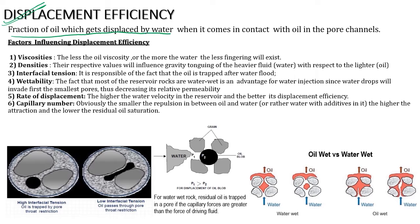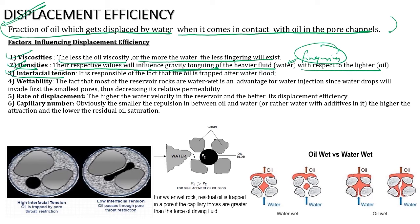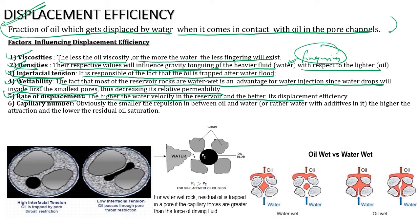Displacement efficiency is the fraction of oil displaced by water when it comes in contact with oil in the pore channels. Factors influencing displacement efficiency: viscosities — less oil viscosity or more water viscosity means less fingering. Densities — their respective values influence gravity tanking of the heavier fluid with respect to lighter oil. IFT is responsible for oil being trapped after the water flood. Wettability — most reservoir rocks are water wet, which is an advantage for water injection since water drops invade smaller spaces first, decreasing relative permeability of water.